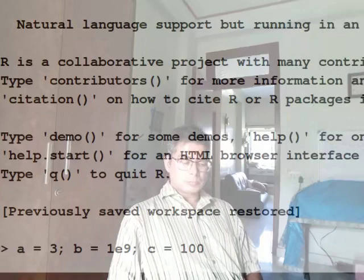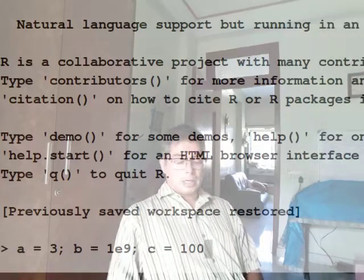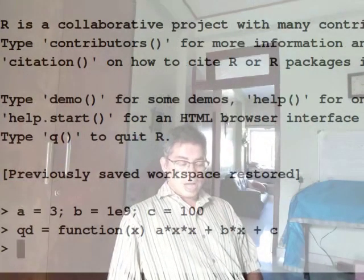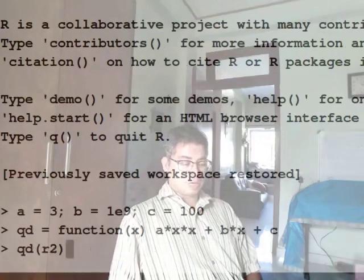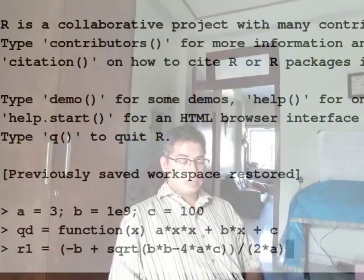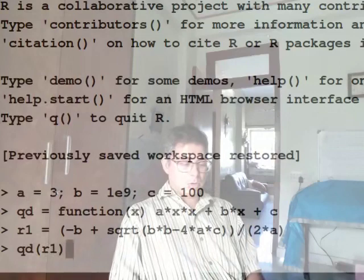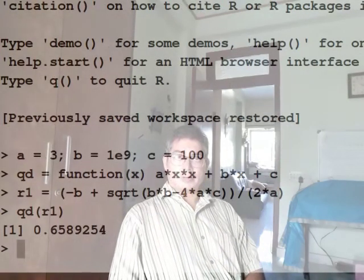Okay, so let's see how this technique that we have learnt - this little manipulation, algebraic manipulation - helps us in practice. So I still work with same a equal to 3, b equal to 10 to the power 9 and c equal to 100. And I have my same qd function qd. I had earlier the function r1. I have made it into a variable now. So r1 is this and we saw that qd of r1 turns out to be quite far from 0.